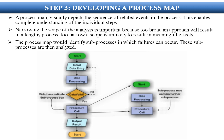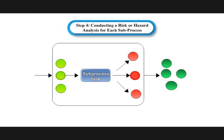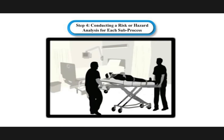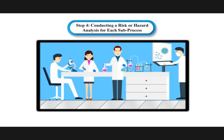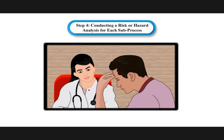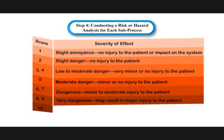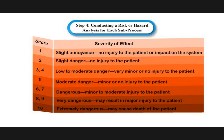Step 4: conducting a risk or hazard analysis for each sub-process. Different ways in which the sub-process can fail should be determined — that is, identification of the failure modes. Not every failure mode will result in harm to a patient, but the impacts of a failure may manifest as procedural delays, equipment breakdowns, reductions in patient throughput, and numerous other factors affecting patient care and customer service.